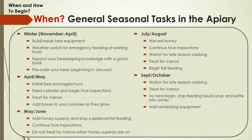In September and October, continue watching for robbing from other honeybees, yellow jackets, and other creatures — apparently skunks love honeybees. Your last treatment for varroa is going to be in September or October as well, unless you're using oxalic acid. As the rains begin, you'll stop feeding liquid sugar feed and begin feeding granulated sugar or sugar fondant instead. Your winterizing equipment goes on in September and October as well, before the rains really start.